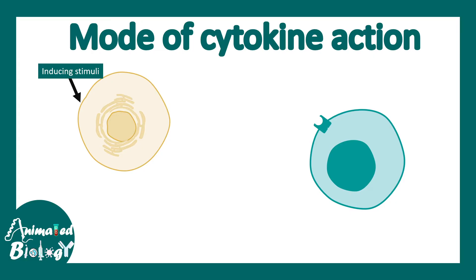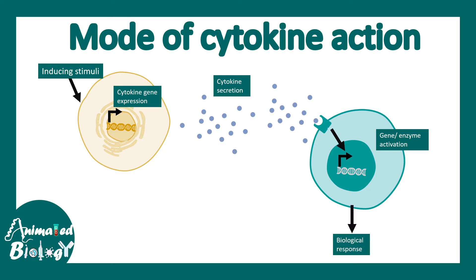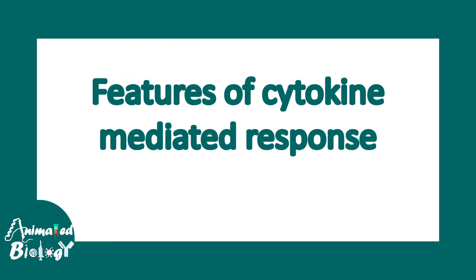How does cytokine action take place? The secreting cell undergoes some stimulus — from another cell or due to pathogen exposure — and upregulates cytokine genes. The protein is produced and eventually secreted. The recipient cell recognizes the cytokine via its cytokine receptor, activating corresponding genes or enzymes and evoking a biological response. This is the common formula for all cytokines, though response kinetics can differ between cytokine families.